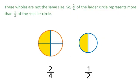These wholes are not the same size, so two-fourths of the larger circle represents more than one-half of the smaller circle. They are the same fractions of their wholes, but the amounts are different.